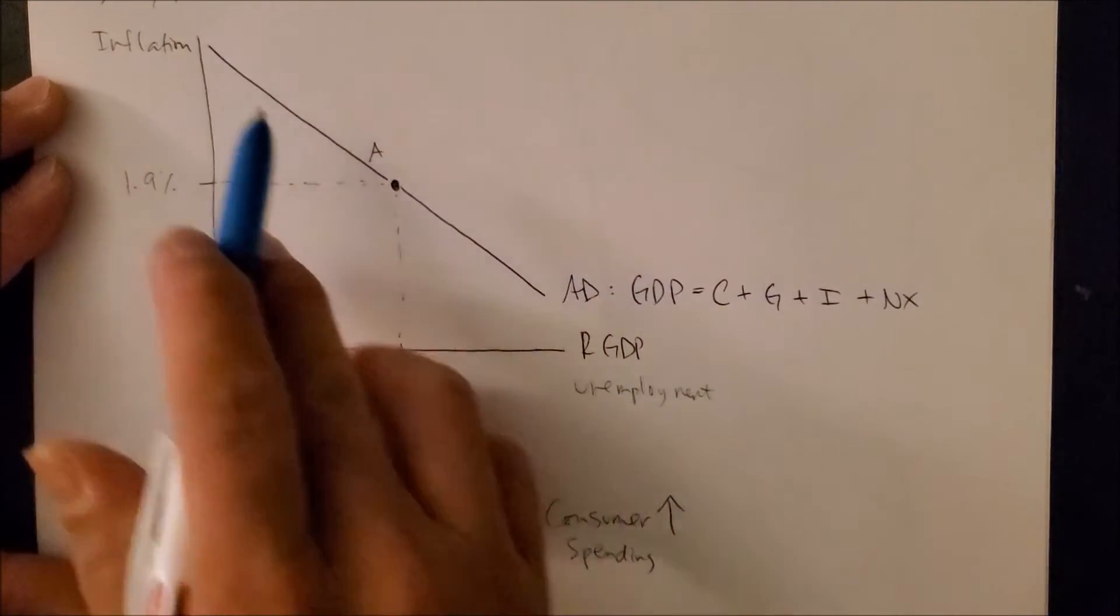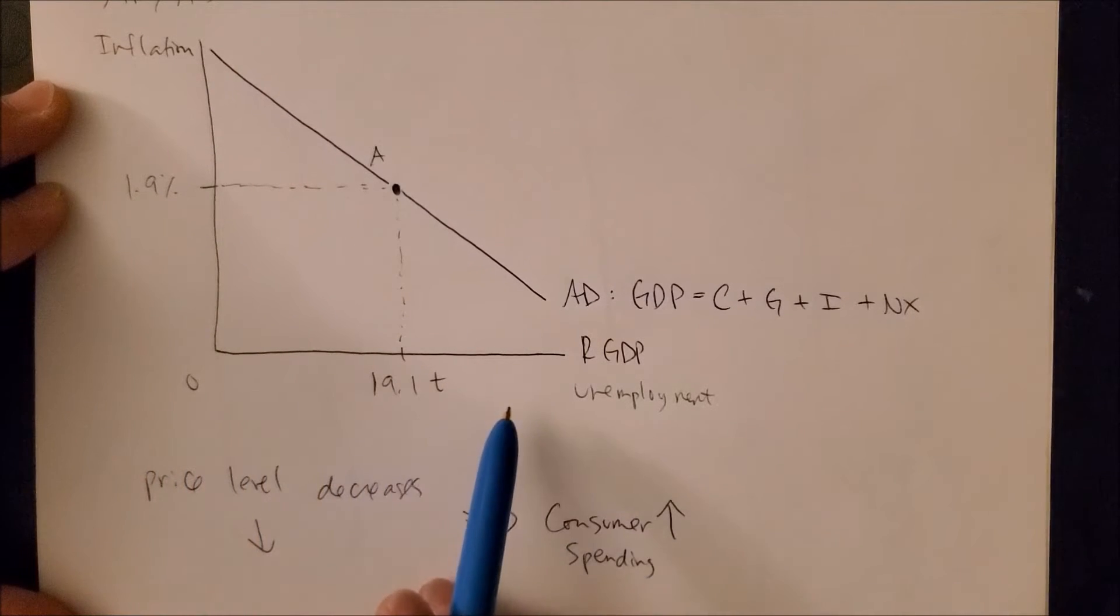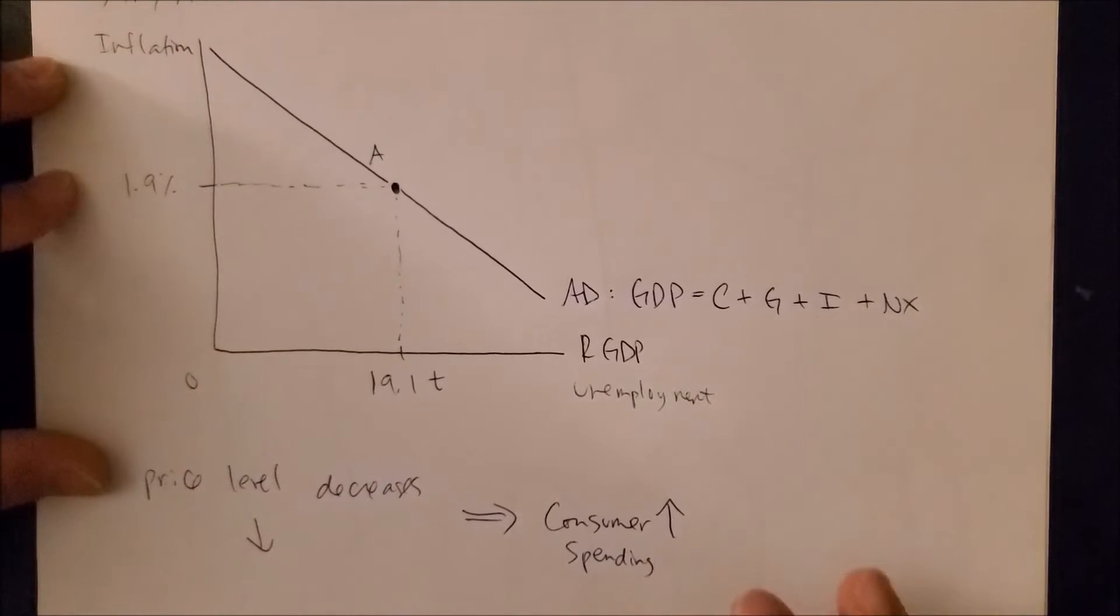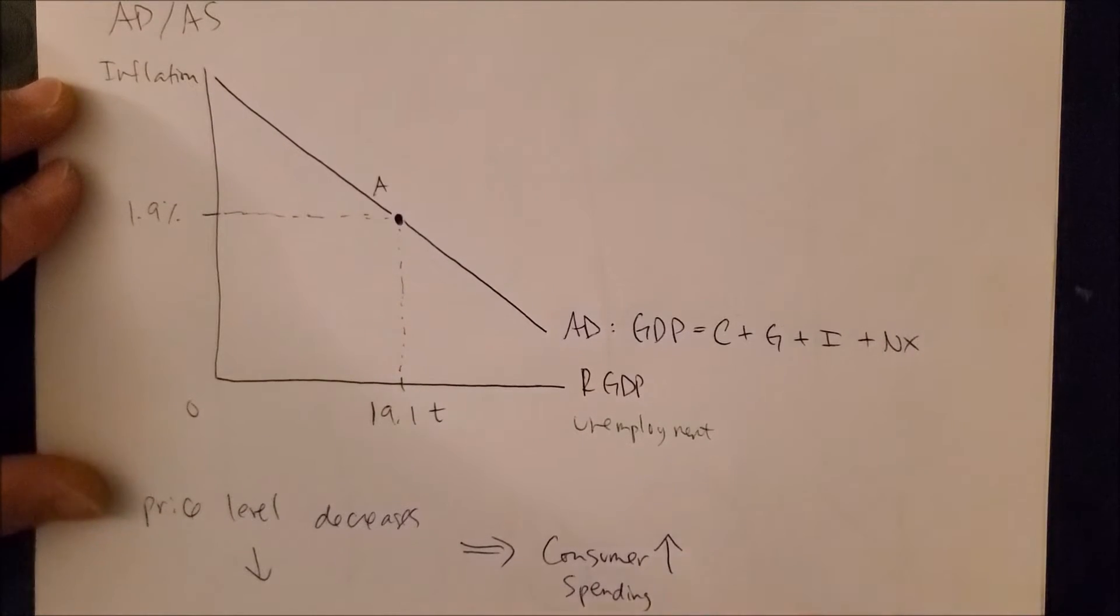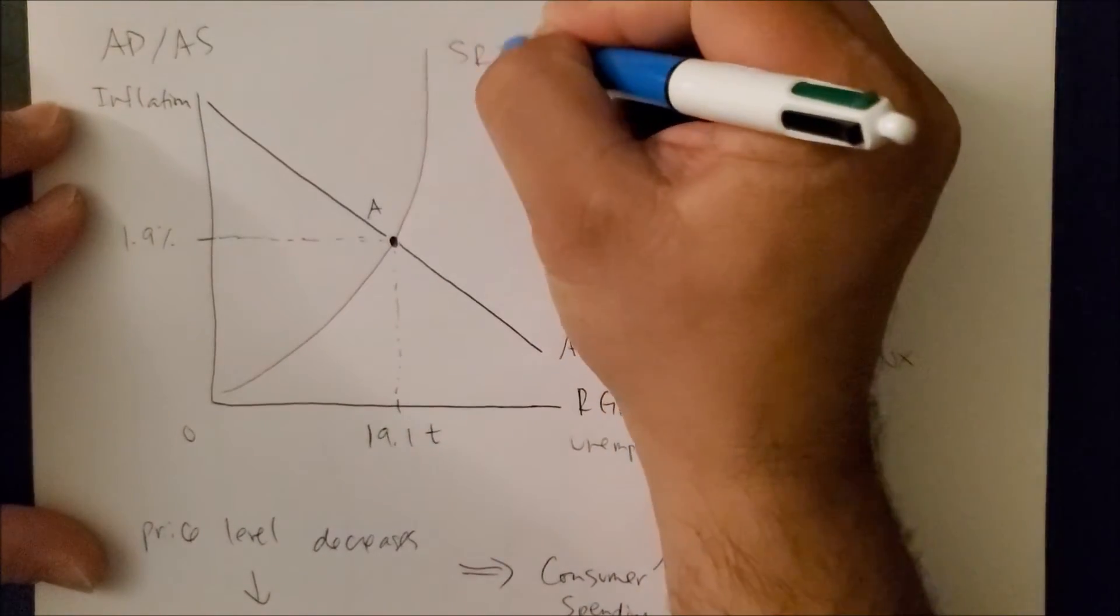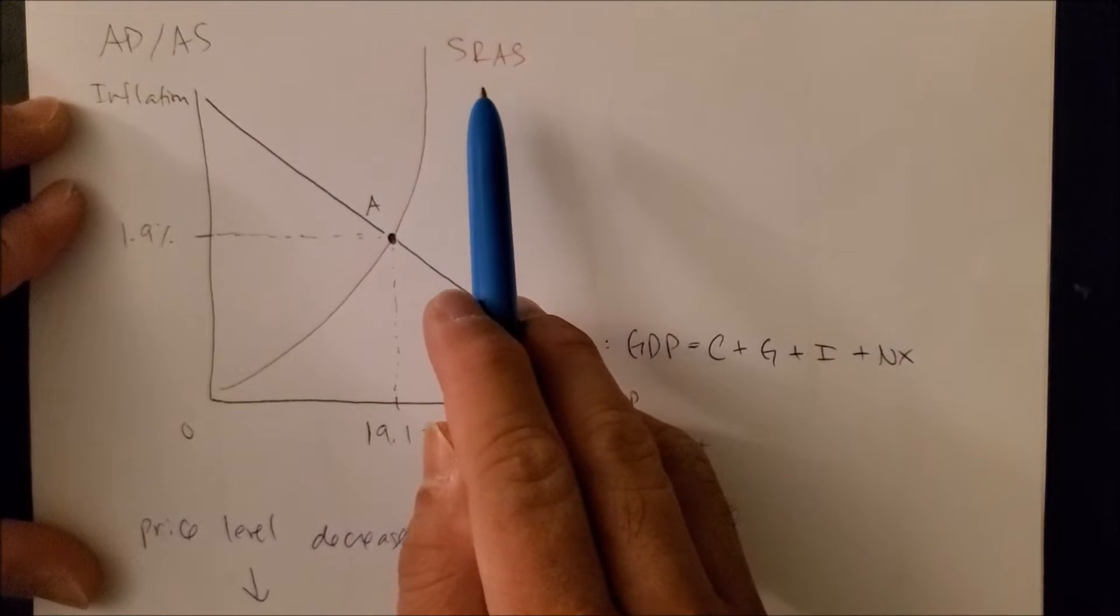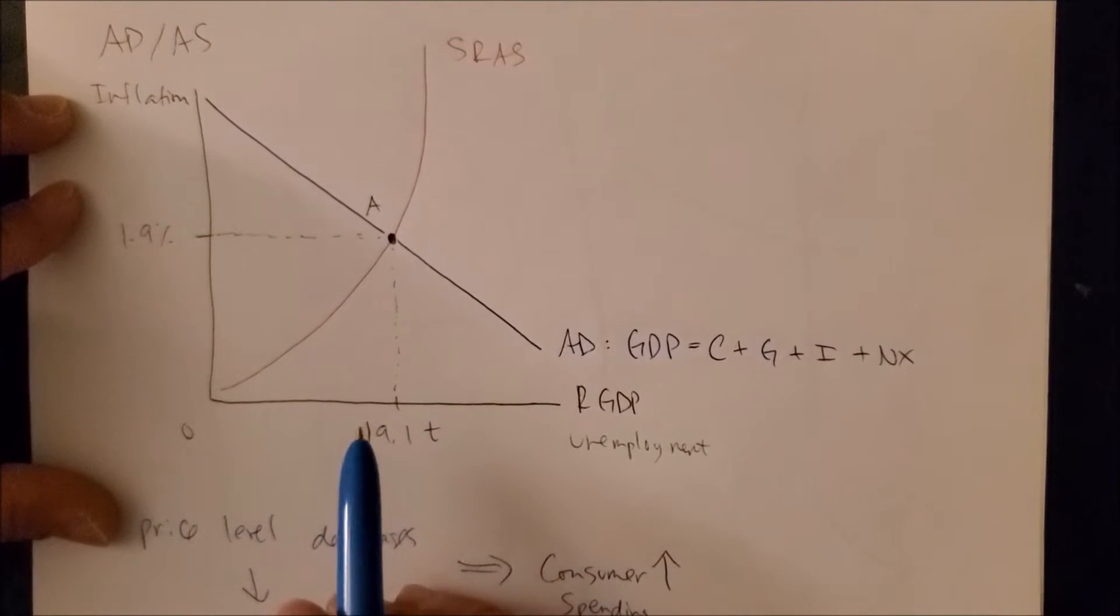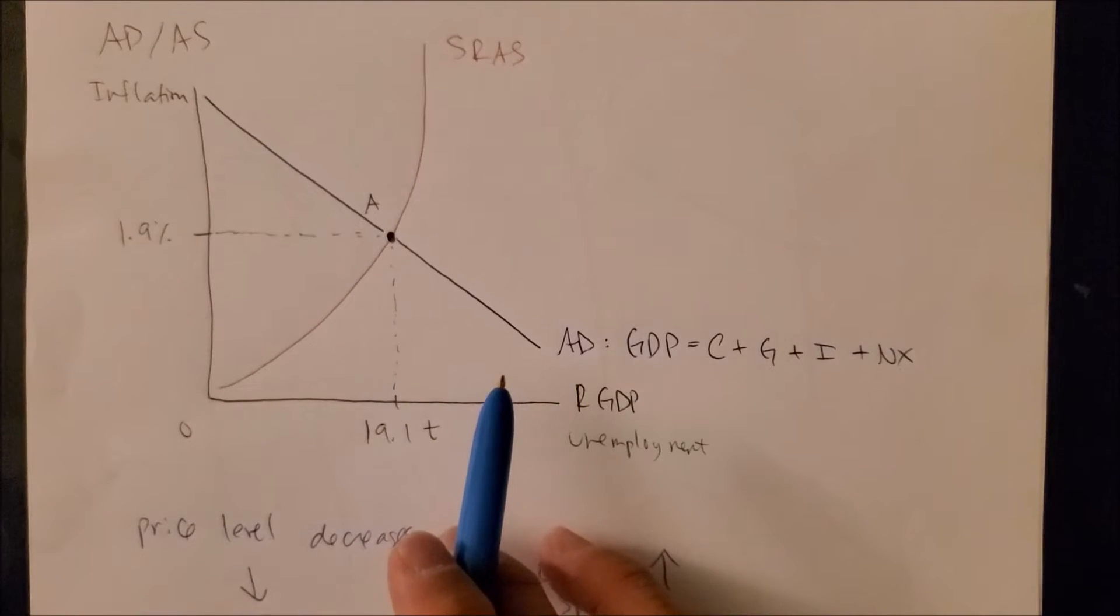As price level decreases, consumer spending increases. Now we want to focus on the AS curve, and to be more precise we're going to focus on the short run AS curve, which looks something like this: SRAS, which stands for the short run AS, for the aggregate supply curve. Notice how the curve is a lot more curvy than what we have, a linear graph of the AD.